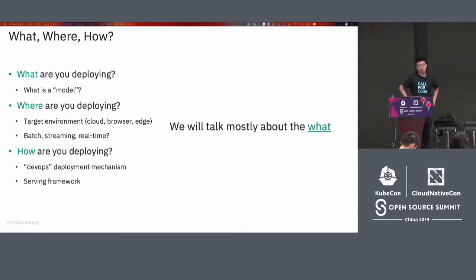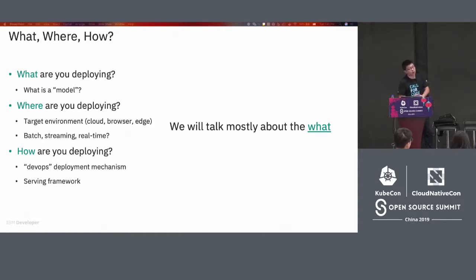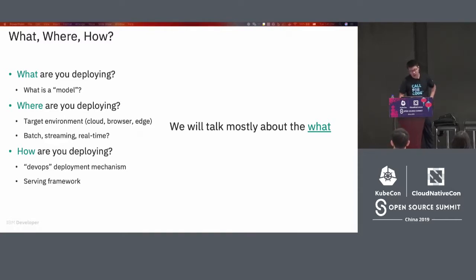When we deploy a model, we need to think about three questions. First is what are you deploying — whether you use TensorFlow or other means. Then you need to think about where you are deploying — whether it's in the cloud, browser, or edge. You also need to think about whether it should be real-time or streaming. The last question is how are you deploying — whether you use a server engine.